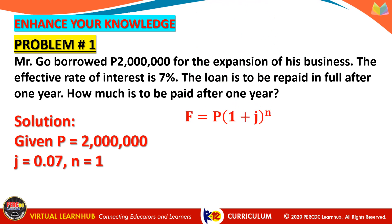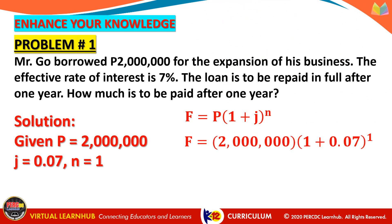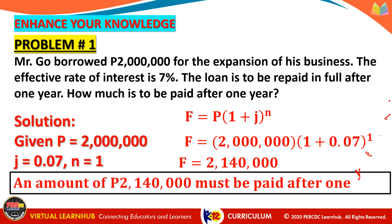F — the amount paid after one year or the future value of money — equals P times (1 plus J) raised to N, where P is the present value or money borrowed by Mr. Go. Substituting the given: P equals 2 million, J equals 0.07, and N equals 1. So, 2 million times (1 plus 0.07) raised to 1. Therefore, F equals 2,140,000 pesos. Thus, an amount of 2.14 million must be paid after one year.